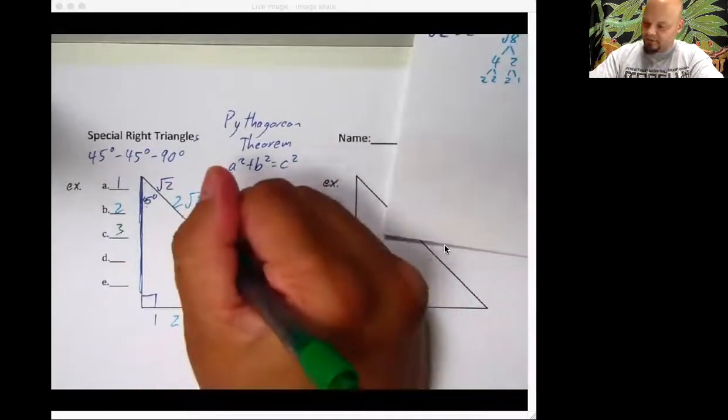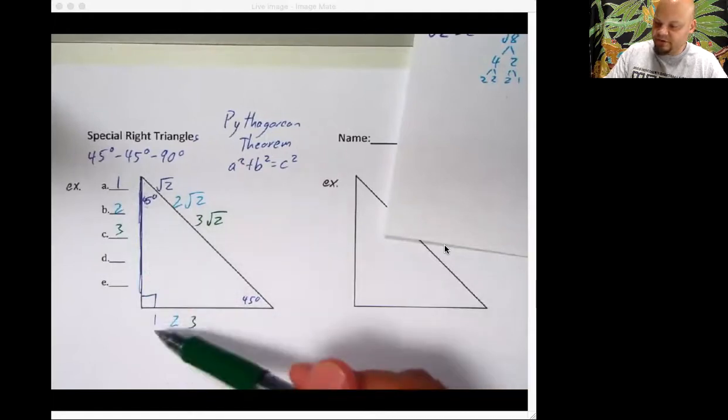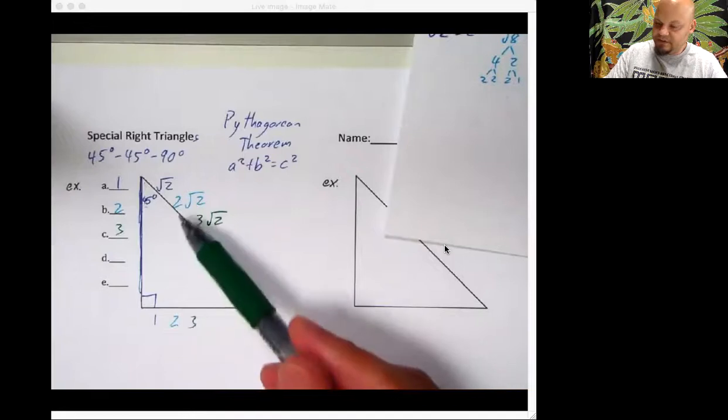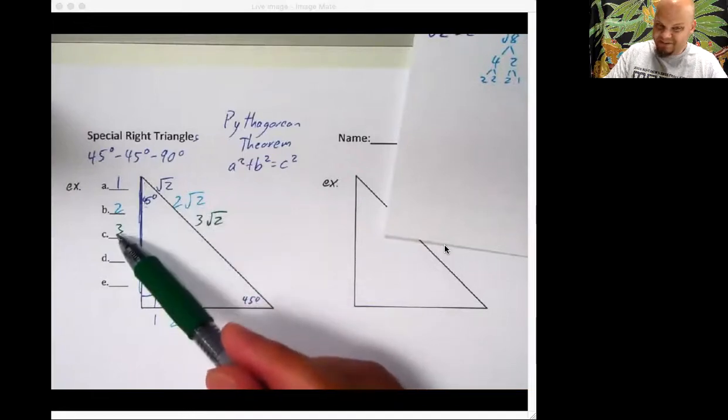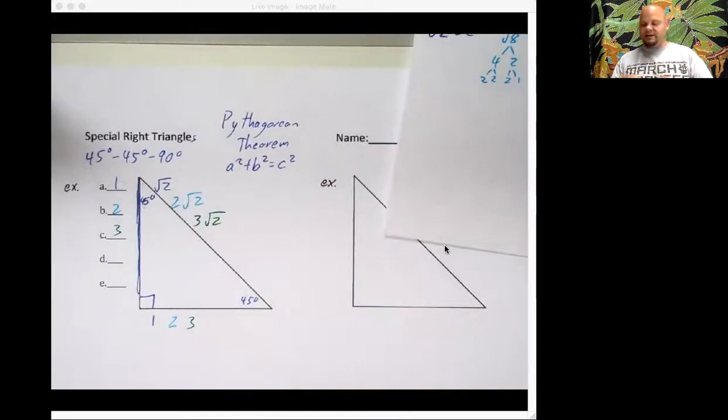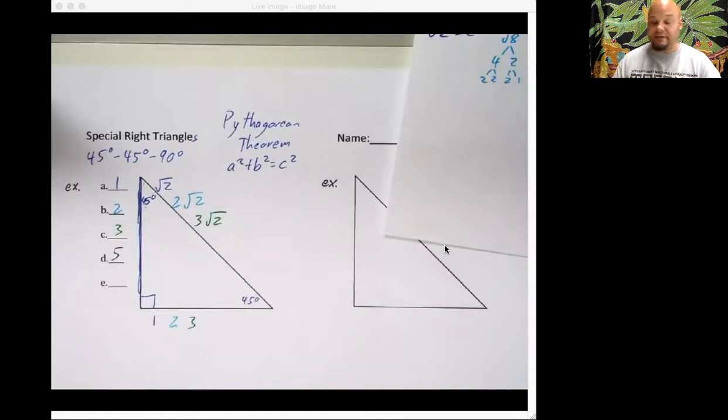As I put that down, all of a sudden the brain starts to get its work on. I did a side of one, this was one, this was root two. A side of two, this is two, this is two root two. A side of three, this is three, this is three root two. So when I jump ahead and I put in five, without using the Pythagorean theorem, can you figure out what the other two sides are? Now I'm still going to use the Pythagorean theorem, but if you think you know, write them down now.